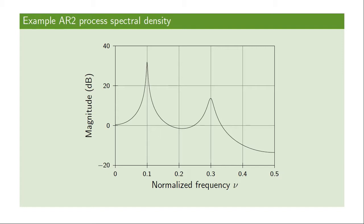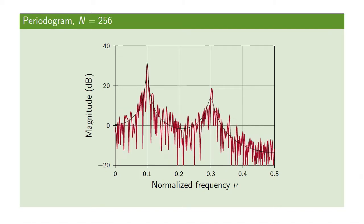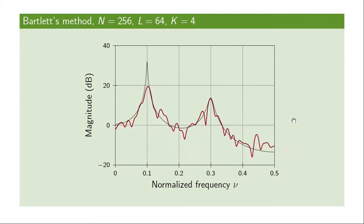We can illustrate this for the AR2 process we have seen before. The true power spectral density is shown as the solid black curve. Computing the periodogram based on 256 samples could look like this — different realizations lead to different estimates, and the variation at any particular frequency point is quite large since the periodogram has a large variance. Using Bartlett's method with 256 samples divided into blocks of length 64 gives four blocks to average over, producing an estimate that is overall closer to the true power spectrum.